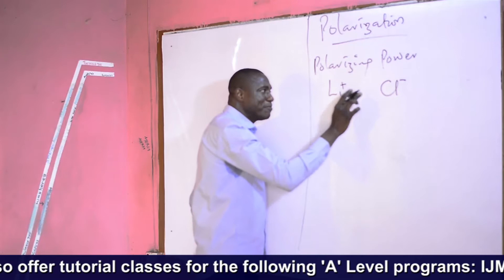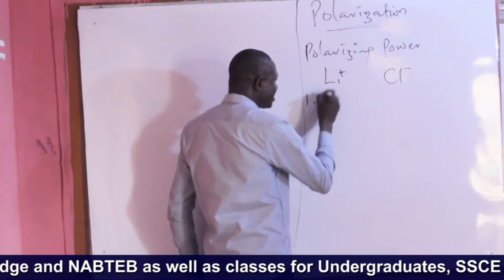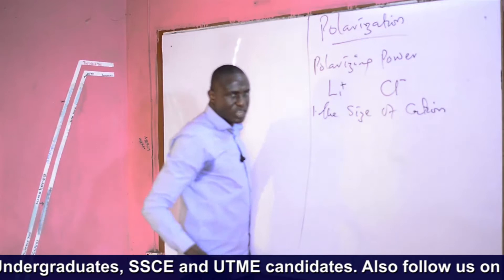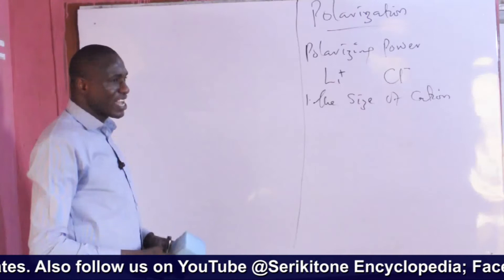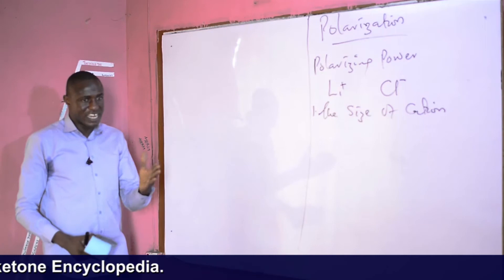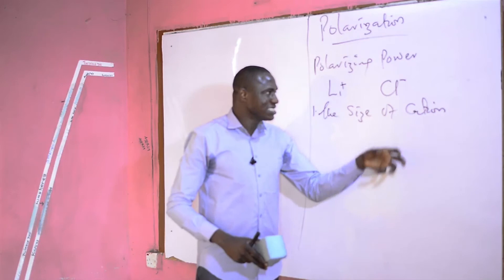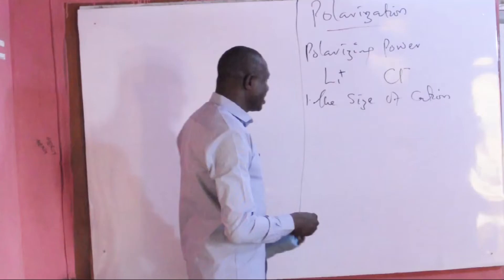The ability of the chloride ion to be polarized by the lithium ion is dependent on several factors. The first of those factors is the size of cations. We notice that smaller cations usually have higher polarizing power than larger cations. The higher the polarizing power of a cation, the more the covalent character of the molecule, and the less the ionic character of that molecule.